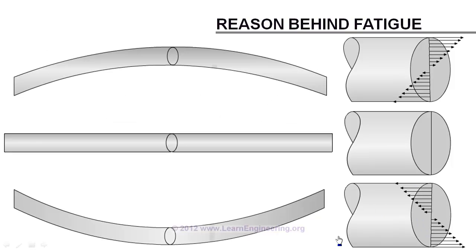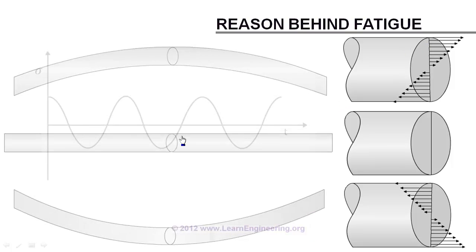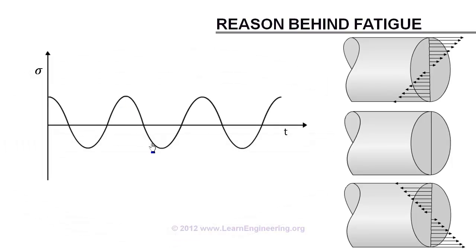So if you trace stress induced at a point with respect to time, it will vary like this. As a fluctuating stress with time. Initially the point will have positive stress. After that zero. Then negative stress. The same cycle repeats again and again.